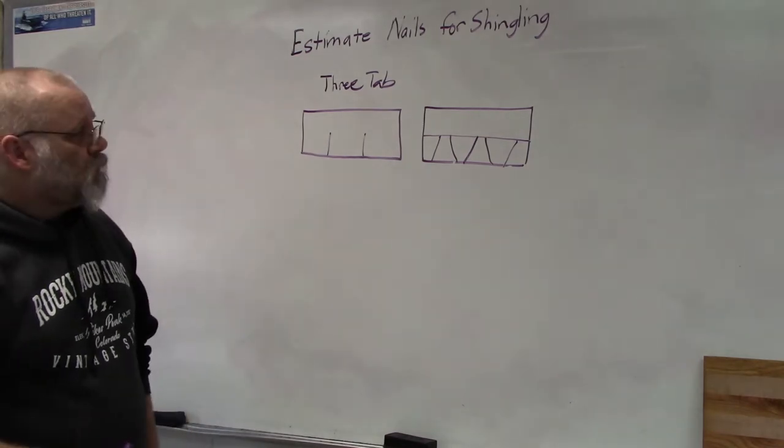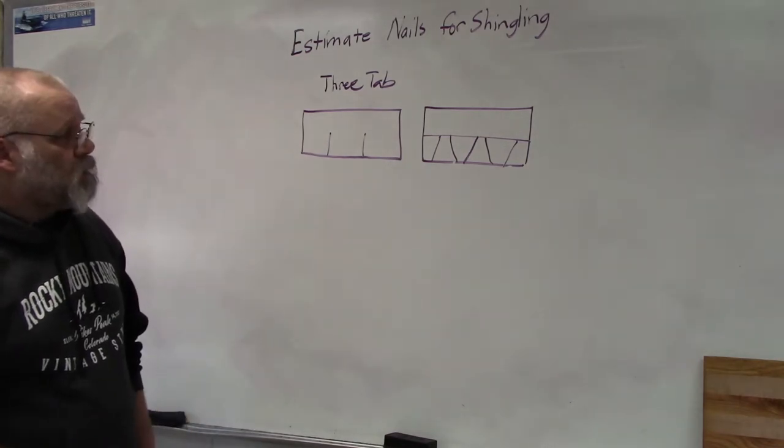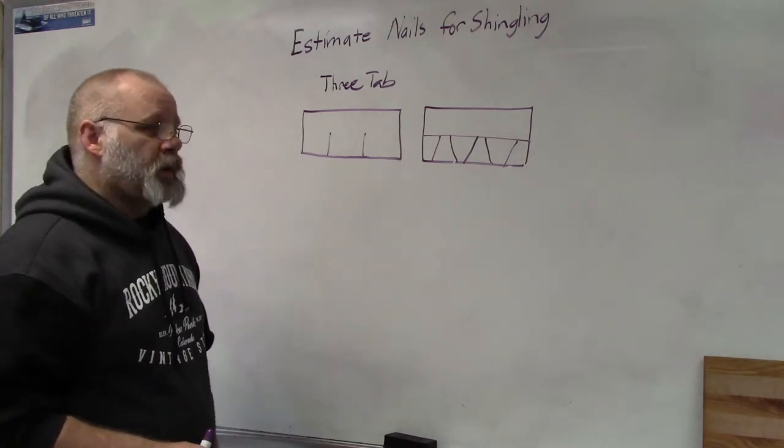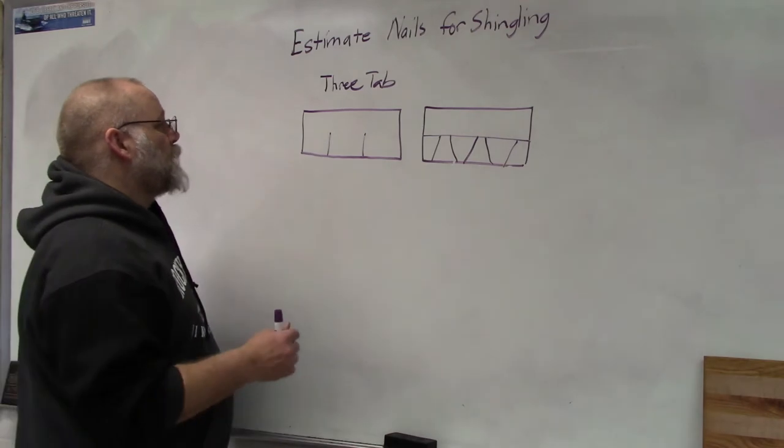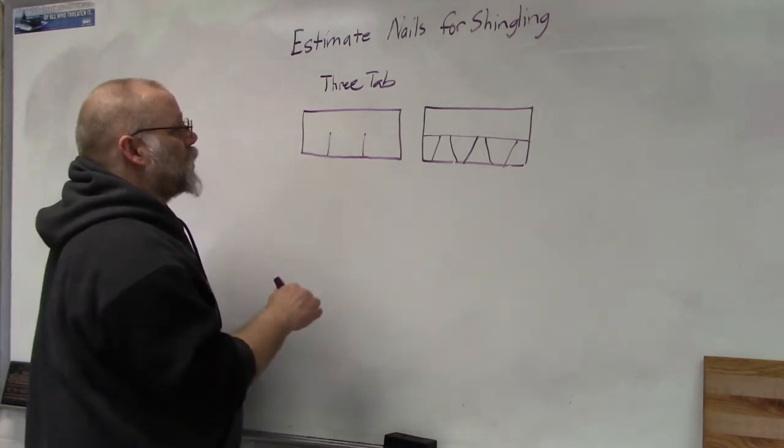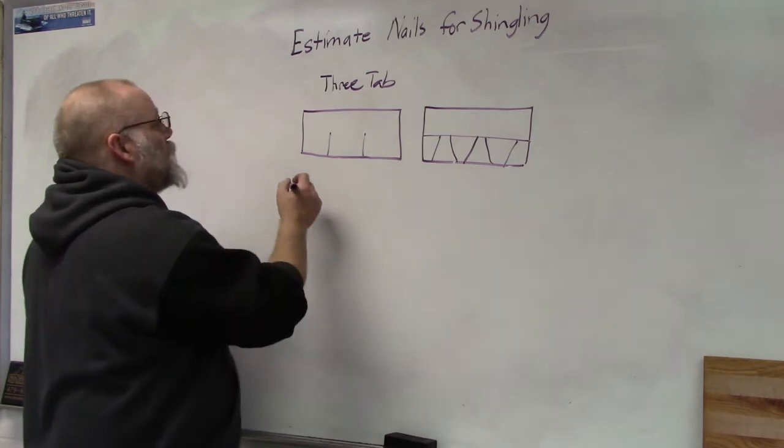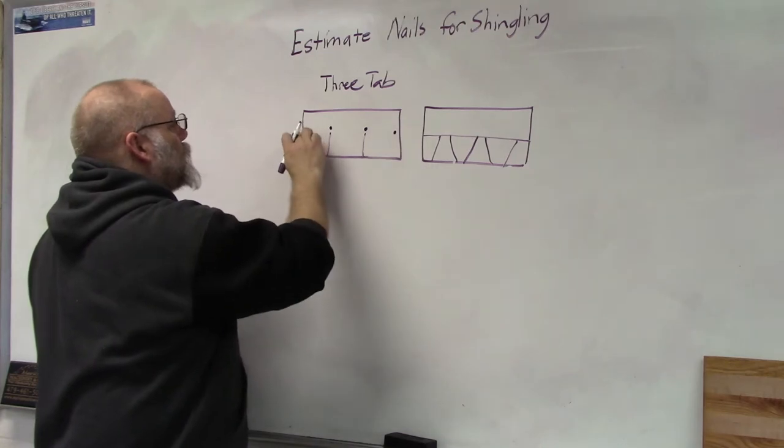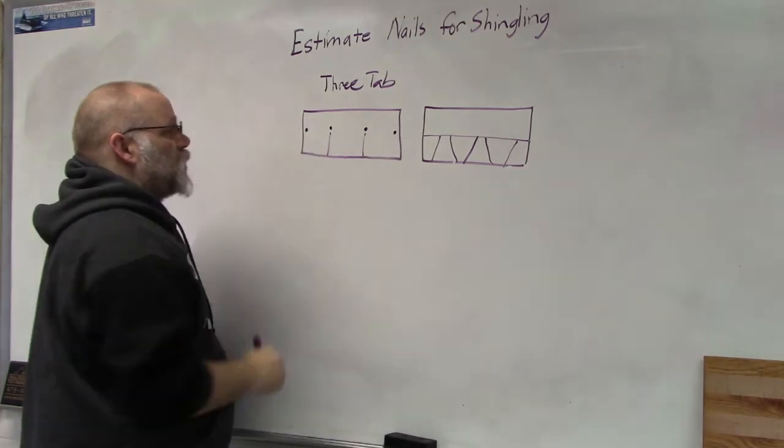How many nails does it take to nail on a three tab shingle? Well, you have to look at whether you're in a windy area or not. Okay, if you're in an area that doesn't get a whole lot of wind or you're not a high wind area, you're going to use four nails to nail the shingle down.